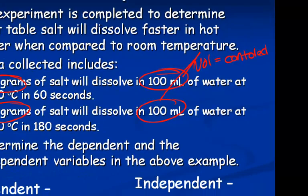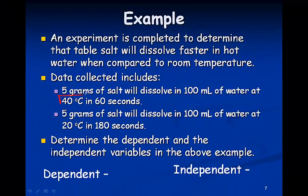So, what we're left with is 40 degrees Celsius and 20 degrees Celsius. The temperature. The temperature is what we intended to change. This was our independent variable. Our dependent variable is the time that it takes to dissolve.